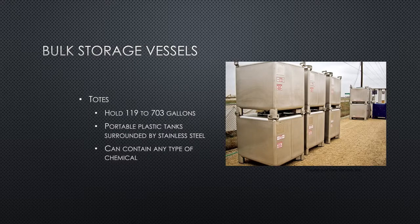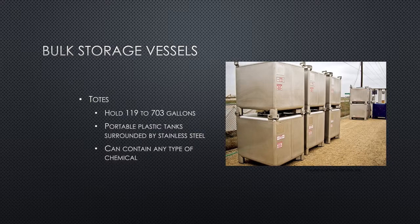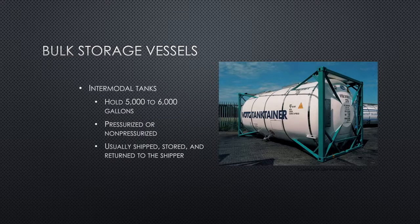Totes hold 119 to 703 gallons — those numbers are specific because manufacturers know exactly how much they will hold. They're portable plastic tanks surrounded by stainless steel and can contain any type of chemical. They're referred to as intermediate bulk containers. Because they're portable, they can be moved from one place to another. An important thing to remember: totes have no secondary containment system.